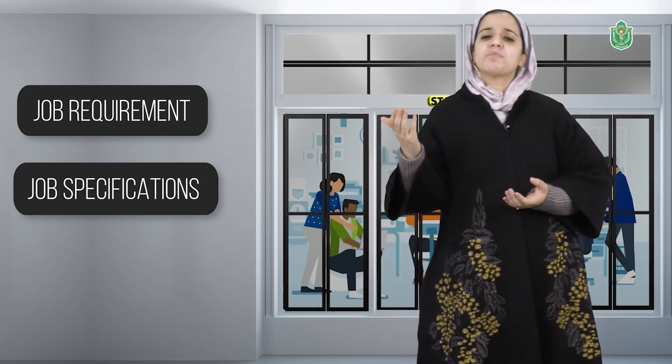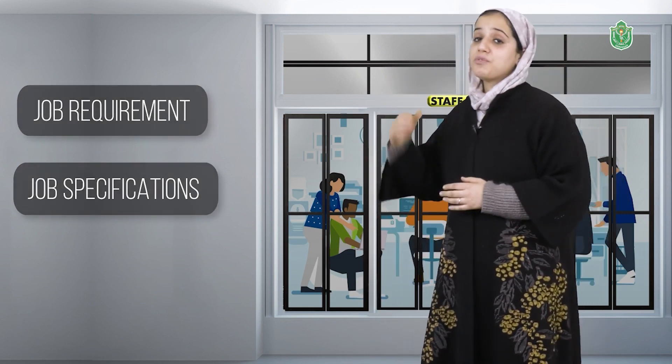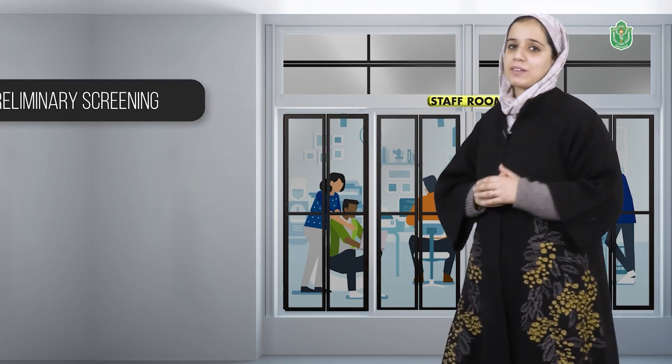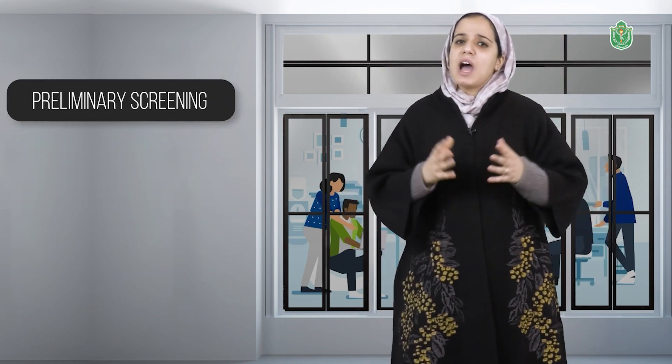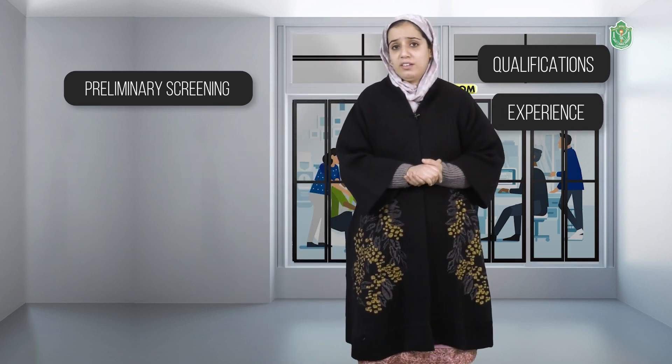The selection process includes a number of steps, and the first step is preliminary screening. After receiving the applications, they are carefully scrutinized and properly checked with regard to qualifications and experience by the screening committee. The purpose here is to eliminate the person who is totally unfit for the organization. A list of candidates to be called for selection tests is made, and the unsuitable ones are altogether rejected.